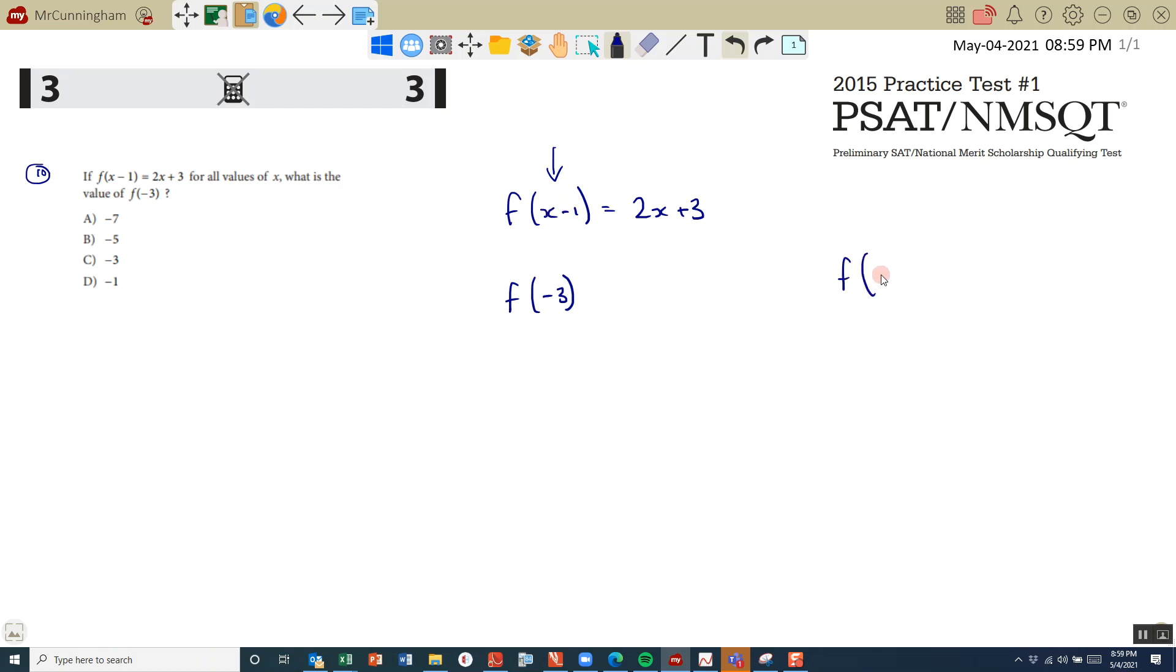Well, if I was to look at f of negative 2 minus 1, so this is my x. So there's my formula, f of x minus 1. If I let x equal negative 2, that's going to give me f of negative 3, because negative 2 take away 1 is negative 3. So the value of x that I need to sub in is negative 2. So it's 2 times negative 2 plus 3. Negative 4 plus 3 is negative 1. So it's d.